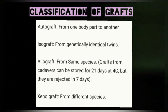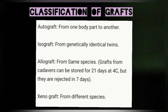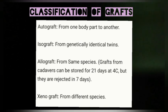On the basis of donor, a graft can be divided into four types. An autograft is taken from one body part to another. Isografts are taken from genetically identical twins. Allografts are taken from the same species — a cadaver can be used, and the graft can be stored for 21 days at 4 degrees centigrade, though these grafts are usually rejected within a week, making them suitable for temporary grafting.